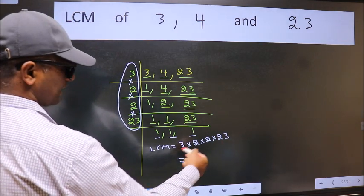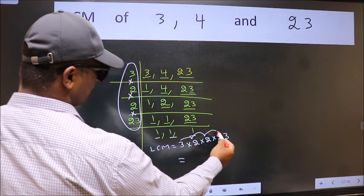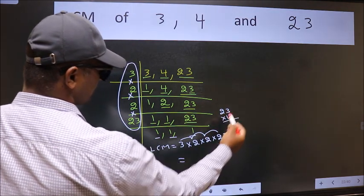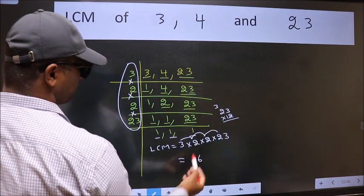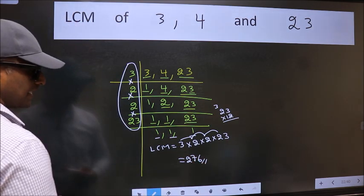Let us multiply these numbers. 3 times 2 is 6. Times 2 is 12. Times 23. 12 times 3 is 36. 6, 3. 12 times 2 is 24. Plus 3 is 27. So 276 is our LCM.